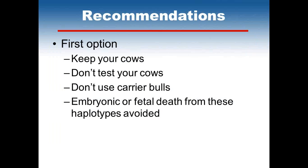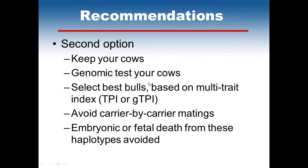The recommendations to consider: Option one is to keep your cows — there's no reason to be afraid of carrier cows. Even if you don't test your cows, if you don't use a carrier bull, the embryonic or fetal death from these haplotypes can be avoided. Option two is to keep your cows, genomically test them, select your best bulls based on a multi-trait index like TPI or GTPI, and then avoid carrier-by-carrier matings. This will allow you to avoid haplotypes that would result in embryonic or fetal death.